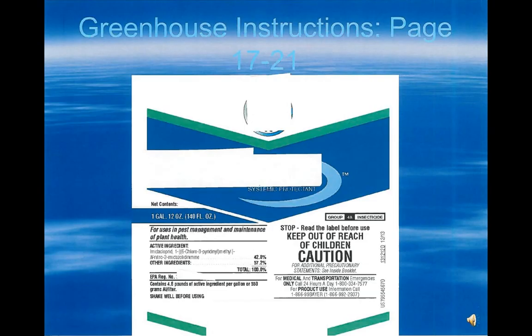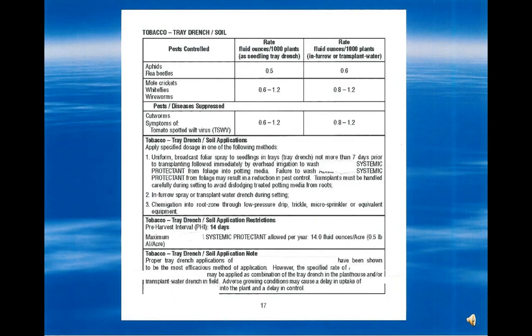For any active ingredient on the approved Nevada list, there is usually more than one product which meets the legal criteria. This particular product contains the same active ingredient, imidacloprid, as in the previous slide and does have a section on the label which gives the proper use rates for greenhouse plants. In the greenhouse section of the label, only one rate is given: 0.5 fluid ounces per 1,000 plants. It also states that seedlings must not be treated more than seven days prior to transplanting to assure effectiveness of the chemical treatment.